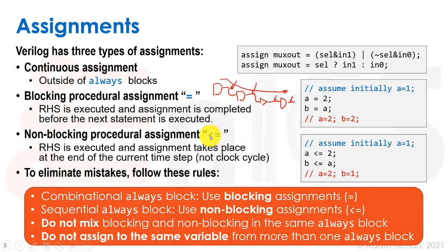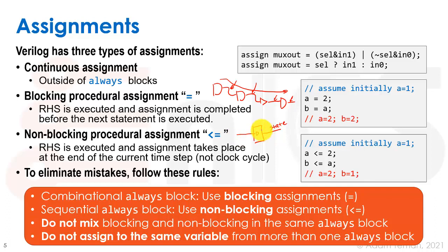The non-blocking assignment <= evaluates the right-hand side and then assigns to the left-hand side at the same time — at a singular moment in time. This should only happen inside a flip-flop, e.g., at the rising edge of the clock, when everything waiting is assigned simultaneously. If we assign many flip-flops in the same always block they all get the same clock, so we want them all updated at the same time — hence non-blocking assignment.